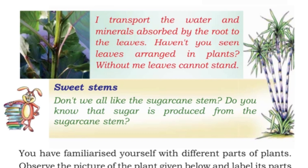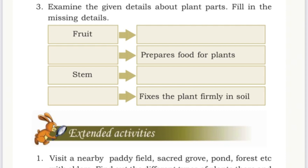All of you open page number 21. Can you complete this table? Fruit: the seed in a fruit germinates to form a new plant. Leaf: prepares food for the plant. Stem: transports water and minerals to all parts of the plant. Root: fixes the plant firmly in the soil. All of you complete this table and write into your textbook and notebook. Find out the answers to the above questions. Wish you all the best. Thank you.